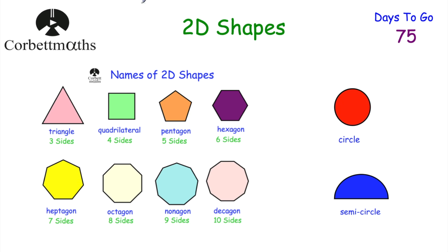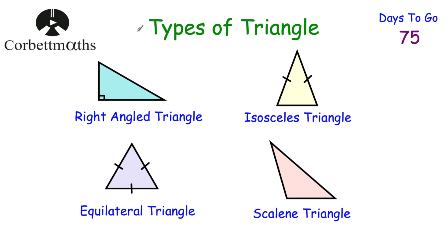Now let's look at triangles in more detail. If a triangle has a right angle — a 90-degree angle — it's called a right-angled triangle. If two of the sides are the same length, that's an isosceles triangle. An isosceles triangle has two sides of the same length, two equal angles, and one line of symmetry — a vertical line of symmetry.